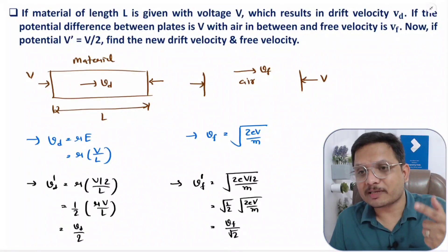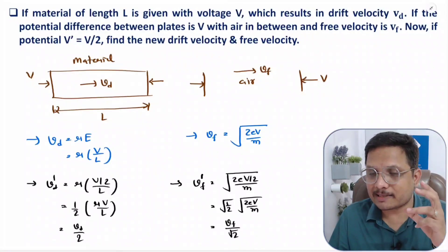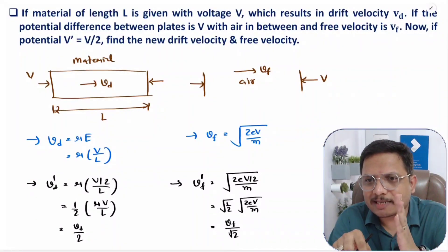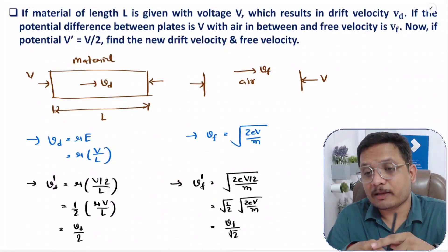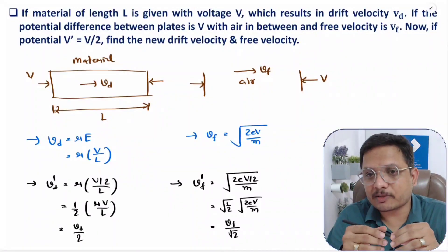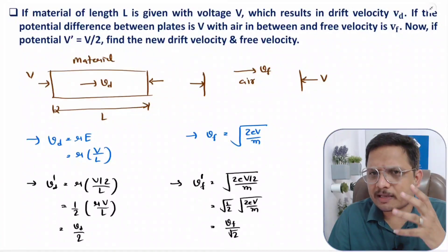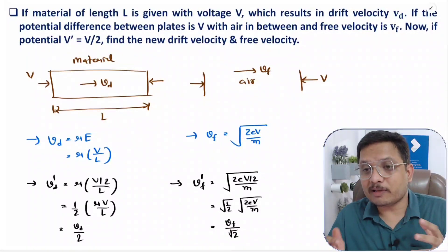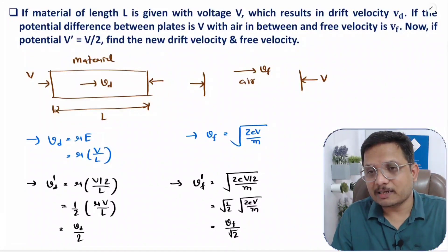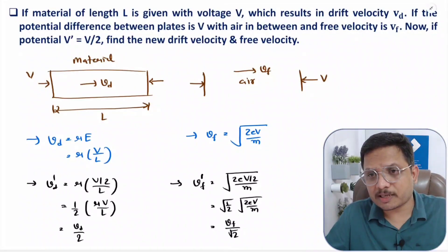So if you divide the potential by 2, the drift velocity becomes half and the free velocity becomes vf divided by root 2. That is how drift velocity and free velocity change with potential. In material, motion of charge carriers is calculated by drift velocity; in free space, it is calculated by free velocity. I hope this has cleared your concept. Please note any questions in the comment section — thank you for watching.